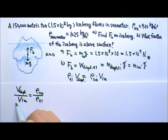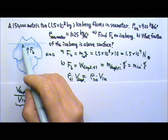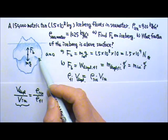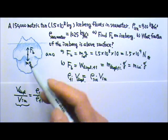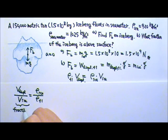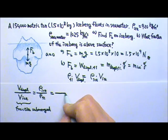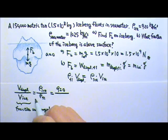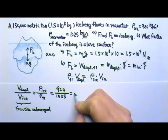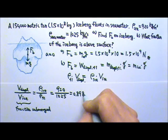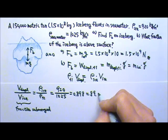The volume displaced is the part under the surface, divided by the volume of the entire ice. This gives the fraction of the ice that is submerged in seawater. The fraction submerged equals the ratio of the densities: 920 divided by 1025, which gives 0.898 or 89.8%.